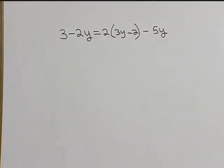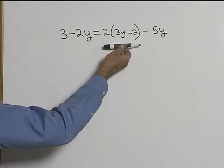Let's solve 3 minus 2y equals 2 times the quantity 3y minus 2 minus 5y for y. First thing we need to do is clear our parentheses.